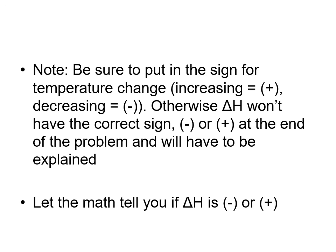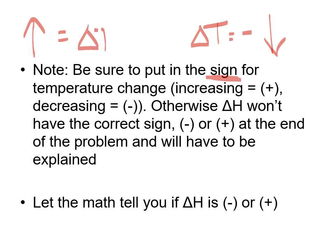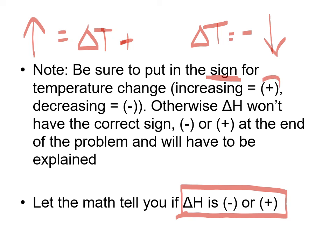Make sure that when you use the change in temperature, you put in the proper sign. If the thermometer reads a drop in temperature, put in delta T as a negative; if it goes up, put it in as positive. This way the math gives you the correct sign on delta H. Some people use an absolute value for delta T and then manually assign the sign, but if you put in the actual signed value, the math will work out to give you delta H correctly.